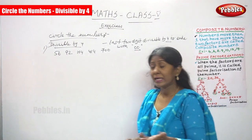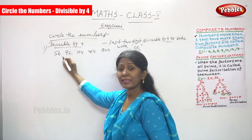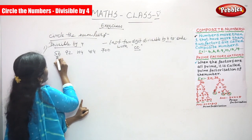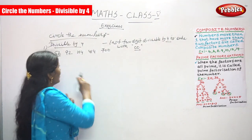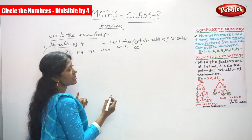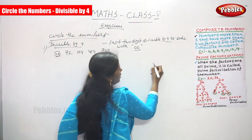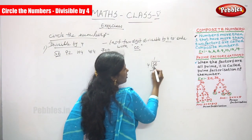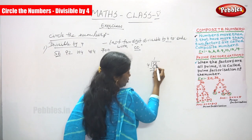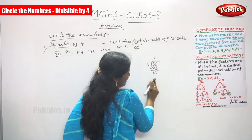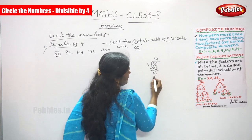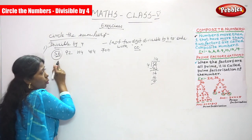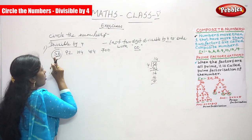So let me remind you of that again. Look at 56. It is only a two-digit number, so 56 itself is the last two digits. Is 56 divisible by 4? Divide: 1 four is 4, 5 minus 4 is 1, bring down 6, 4 fours are 16, remainder is 0. So 56 is divisible by 4.